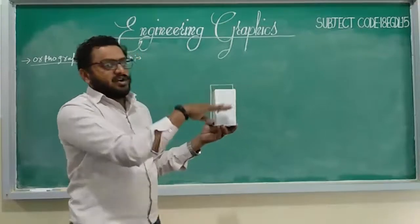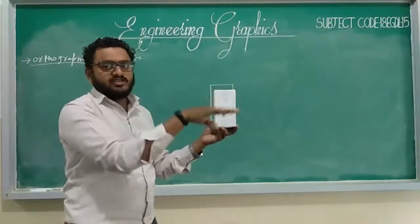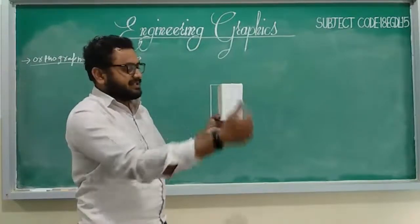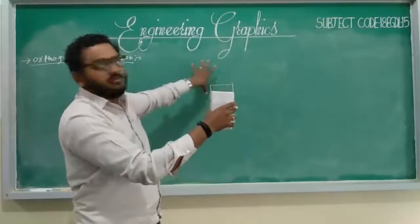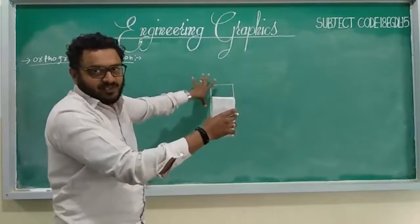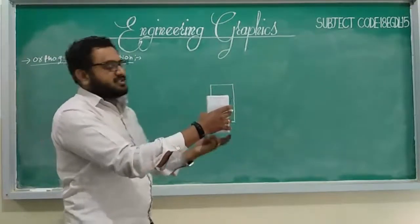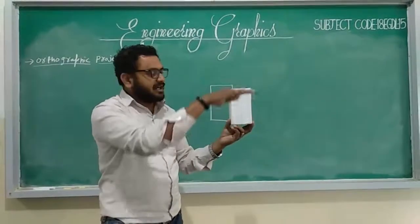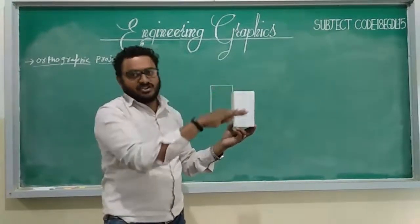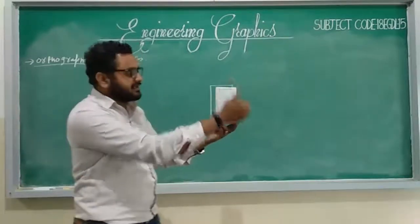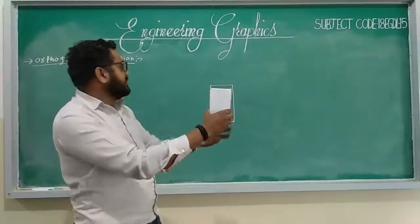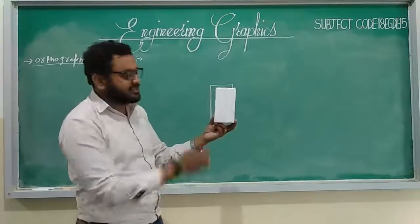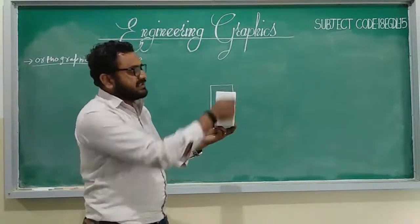The direction of projection — the view — should be perpendicular to the object. It should not be inclined; if inclined, the image will become bigger, which is a different projection method. In orthographic projection, the projection lines should always be perpendicular to the plane of projection and parallel to each other. Then only we get the true image on the plane of projection. From the front view we get the length and height.